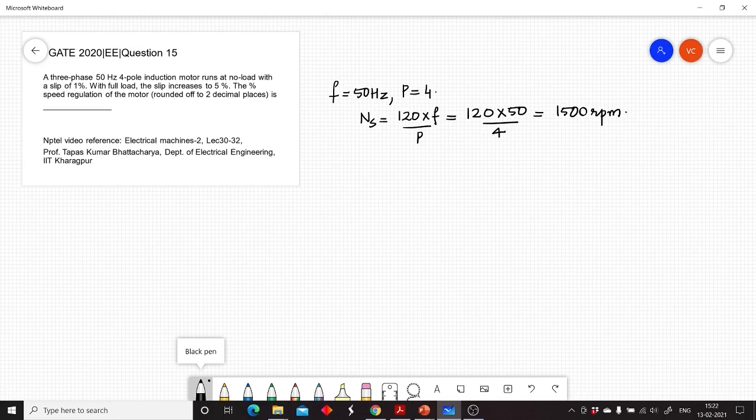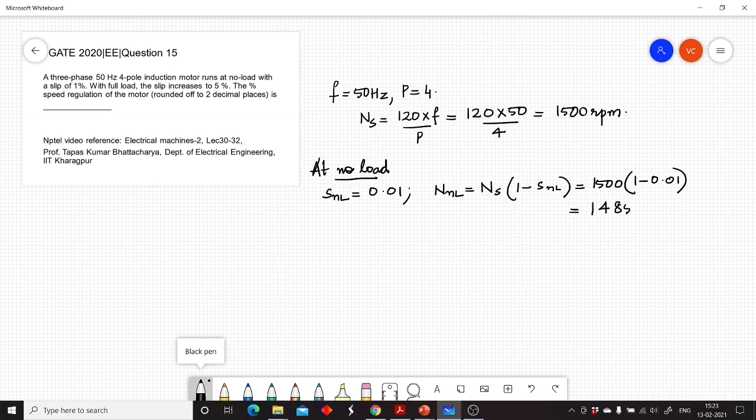Now here we are given two conditions: at no load and at full load. At no load, the slip is given as 1 percent, so Snl equal to 0.01. Correspondingly, the speed of the induction motor at no load, denoted by Nnl, which is equal to Ns into (1 minus slip at no load), which is equal to 1500 into (1 minus 0.01), which turns out to be 1485 rpm.